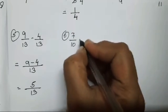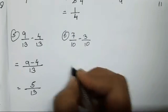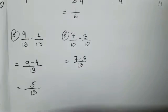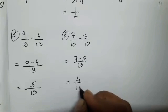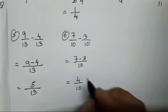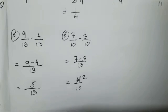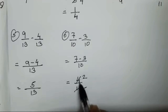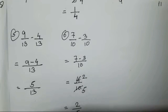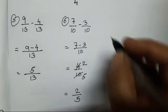The seventh one is 7 upon 10 minus 3 upon 10. The denominator is 10. 7 minus 3 is going to be 4 upon 10. Now 4 and 10 can be divided with a single table — that is 2: 2 twos are 4, 2 fives are 10. We divided both numbers with the table of 2, so your answer is 2 upon 5.